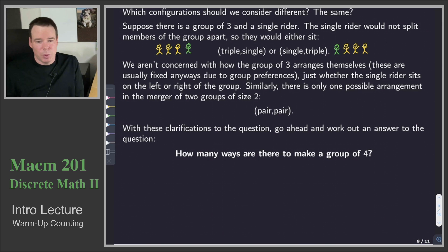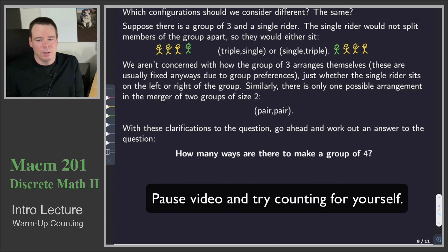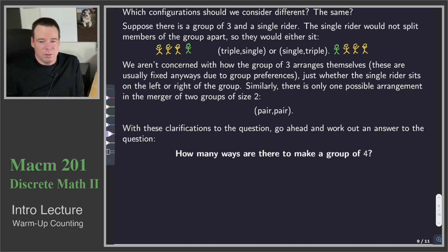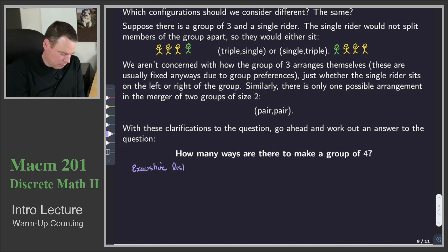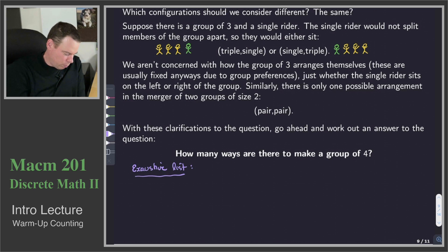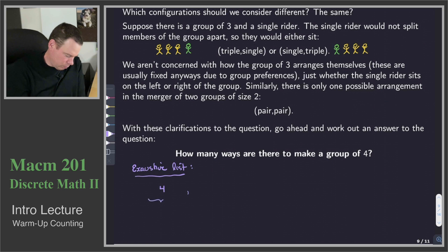With that in mind, pause the video and take a moment to think about how many ways there are to make a group of four. Assuming you paused and thought about it — we're going to attack this problem first by just an exhaustion method. The method of exhaustion, or an exhaustive list, means we're going to go through and write down all possibilities. Once we've written down all possibilities, we just count them up to get our total number of ways to make four. What if there was only a single group that joined? That would be a group of four — one group.